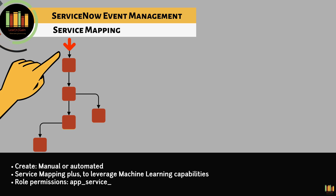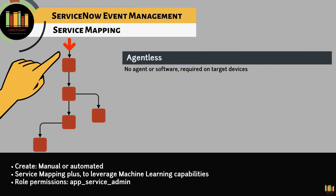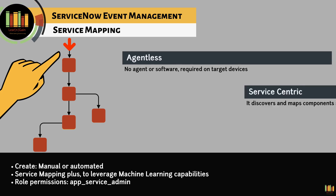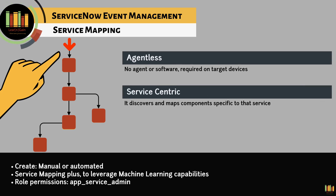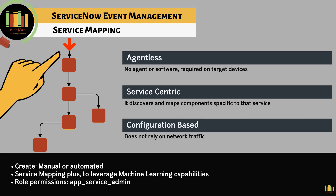One should have the app_service_admin role to build an application service. Service mapping is agentless — no agent or software is required on target devices. It is service centric, as it discovers and maps components specific to that service. It is configuration based, as it does not rely on network traffic.